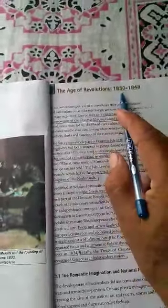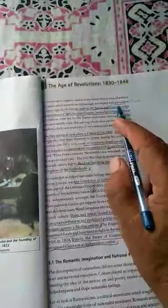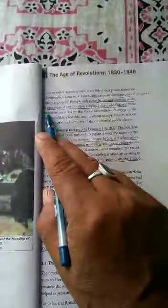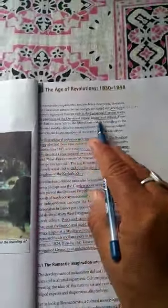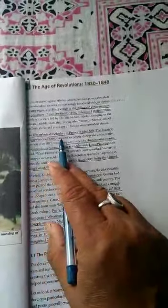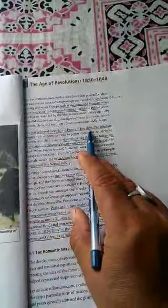The next topic is the Age of Revolution, 1830 to 1848. Revolutions started in many regions of Europe such as Italian and German states, the provinces of the Ottoman Empire, Ireland, and Poland. The first upheaval took place in France in July 1830.